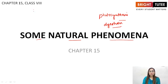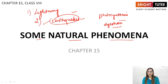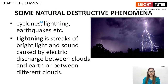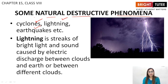Two of those phenomena are lightning and earthquakes. Both are dangerous, with earthquakes being even more dangerous. These are the two phenomena we will be studying in this chapter. There are many natural phenomena, but some destructive ones include cyclones, lightning, and earthquakes. Recently Bengal was hit by a cyclone — cyclones take place in coastal areas, especially on the east coast of India in states like Bengal and Odisha.